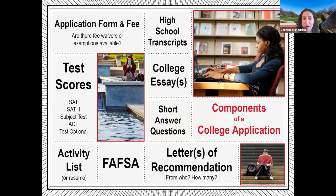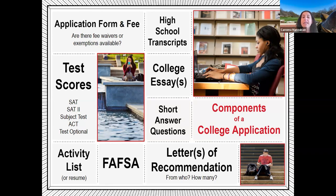The SAT also offers subject testing for specific areas outside of core math and English. Some schools accept these; the University of Maryland only looks at SAT and ACT. Another cool component is superscoring — if you take the SAT or ACT multiple times, some schools will take your two highest section scores across sittings and combine them to give you the highest possible score. Not every school does this, but the majority do.